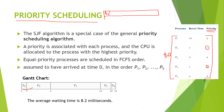Process two is allocated and completes in one second burst time. After that, process five is having the greatest priority of two, so it is awarded the resources and completes its execution. At t equal to six, process one has the greatest priority of three.